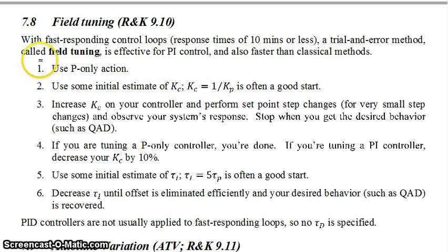The way to do this method, field tuning, is first you use proportional only action. You use some initial estimate of your proportional constant. In this case, 1 over your process gain K_c = 1/K_p is often a good start.